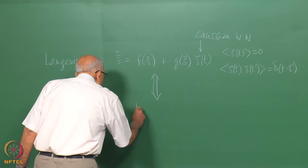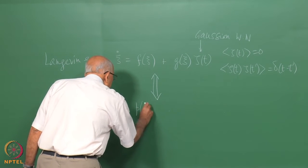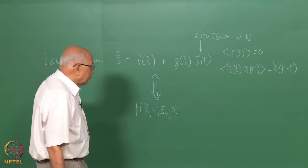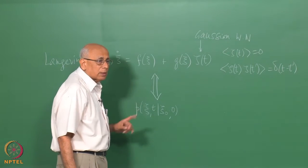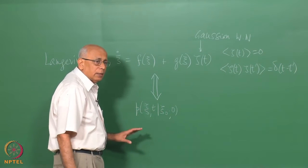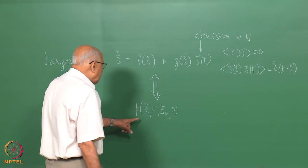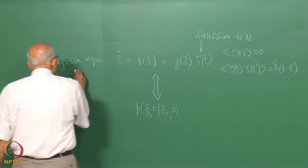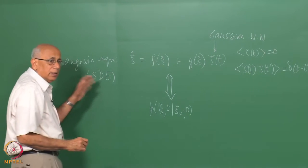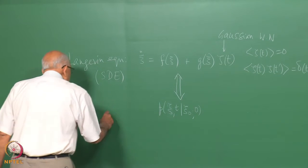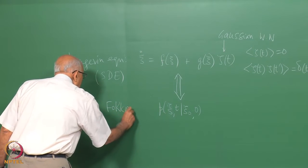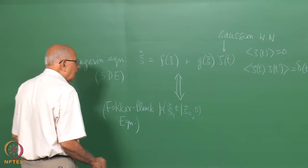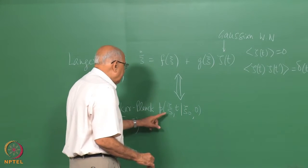For the quantity P of xi, T given xi-naught at 0 — which is guaranteed to be a Markov process, in the sense that this conditional density determines all joint densities — this quantity P satisfies an equation called the Fokker-Planck equation. The stochastic differential equation, which I'll abbreviate SDE, implies for P a Fokker-Planck equation, or FPE for short.